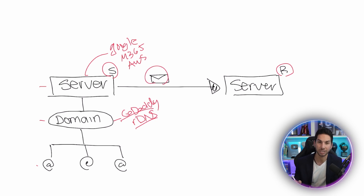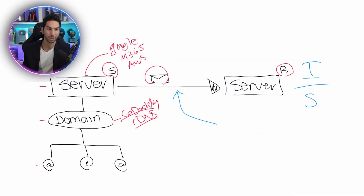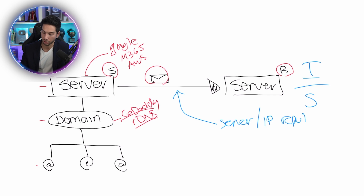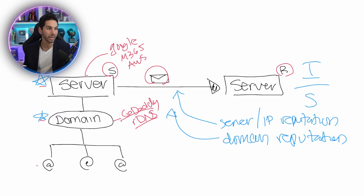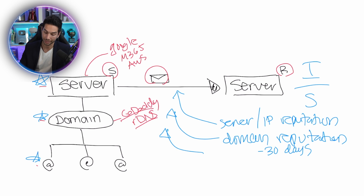That server sends emails to a receiving server, and there are a lot of different factors that determine whether that email is going to go into the inbox or the spam box. A few of these factors are server — sometimes referred to as IP — reputation, so this server has a trust score. The next is domain reputation; the domain also has a trust score, and age is a big part of that. You want your domain to be at least 30 days old, but the older the better. And then your mailboxes also have a trust score. They also look at the content of that email to see if it could be referred to as spam.